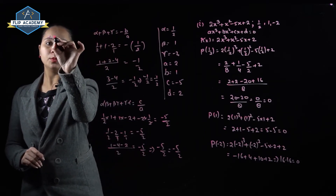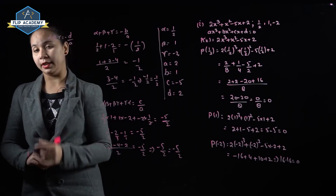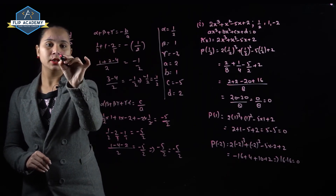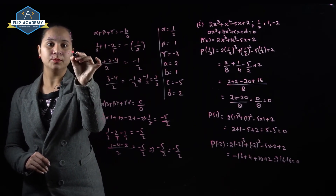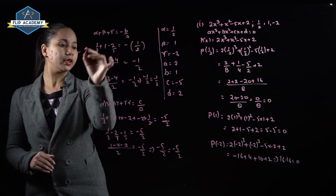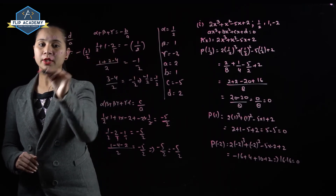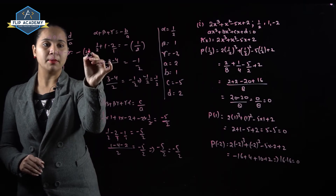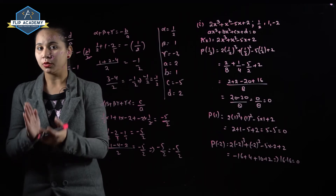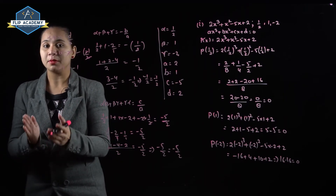Now α × β × γ = -d/a. Substituting: (1/2)(1)(-2) = -d/a = -(2)/2. The 2s cancel, giving -1 = -1. So the relationship between zeros and coefficients is verified here. First part is completed.